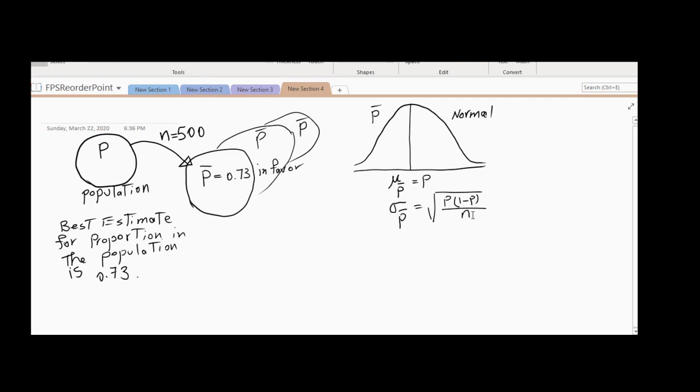However, we don't know what is the proportion in the population, but our best estimate is the proportion in the sample. So if we use that best estimate, we know the population proportion is not that far. Therefore, to find the standard deviation of the variations of sample proportion, we use 0.73 multiplied by 1 minus 0.73, which is 0.27, divided by the sample size of 500.